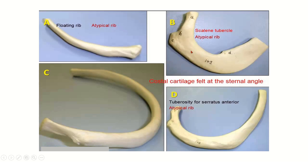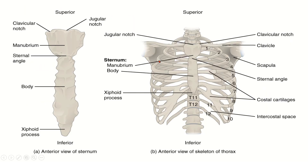The 11th and 12th ribs are floating ribs because they do not come anteriorly and do not join the costal margin. Only up to the 10th rib do the 7th, 8th, 9th, and 10th costal cartilages join to form the costal margin, and they are directly or indirectly attached to the sternum. Because 11th and 12th ribs are floating, the last two intercostal spaces are incomplete anteriorly. That is why there are 11 posterior intercostal arteries but only 9 anterior intercostal arteries.